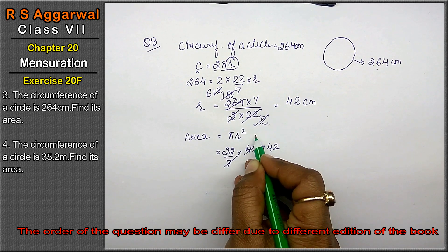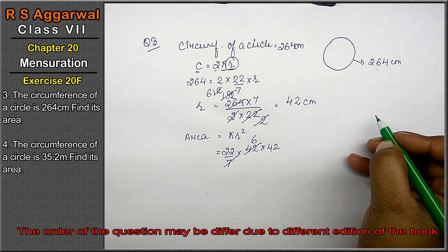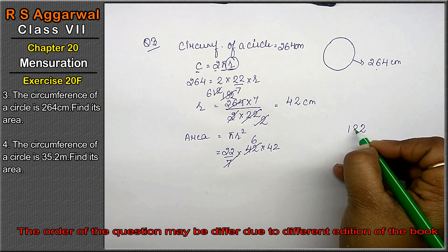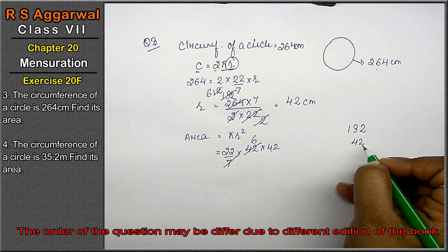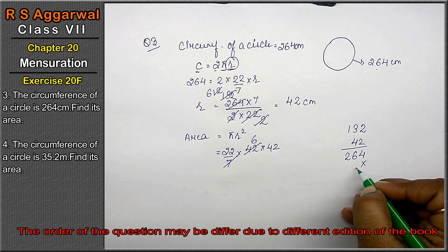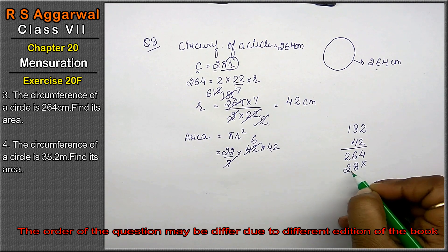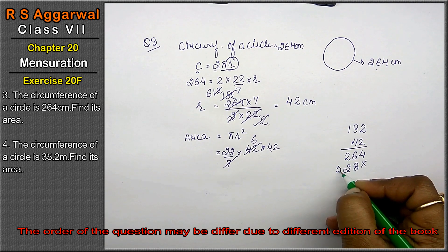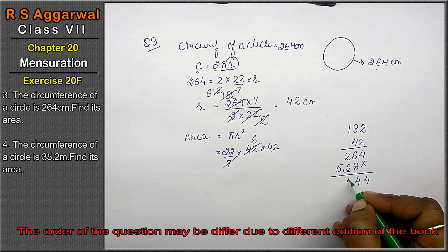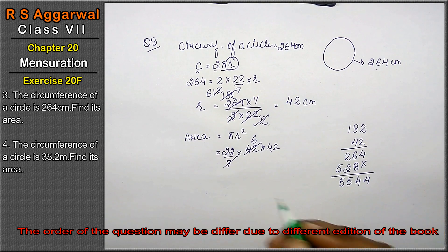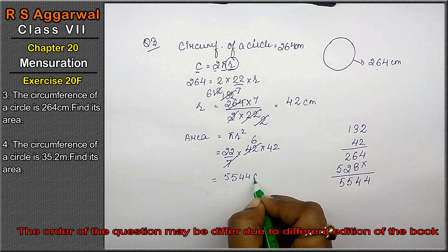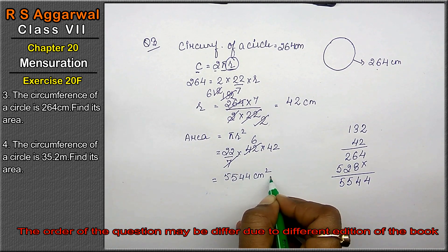7 ones are 7. 7 six are 42. 2 six are 12. Carry 1. 2 six are 12 and 13 into 42. 2 twos are 4. 2's 3 is a 6. 2 ones are 2. 4 twos are 8. 4 threes are 12. Carry 1. 4 ones are 4 and 5. 4, 14, 5 and 5. That means 5, 5, 4, 4. Centimetre square is the answer.